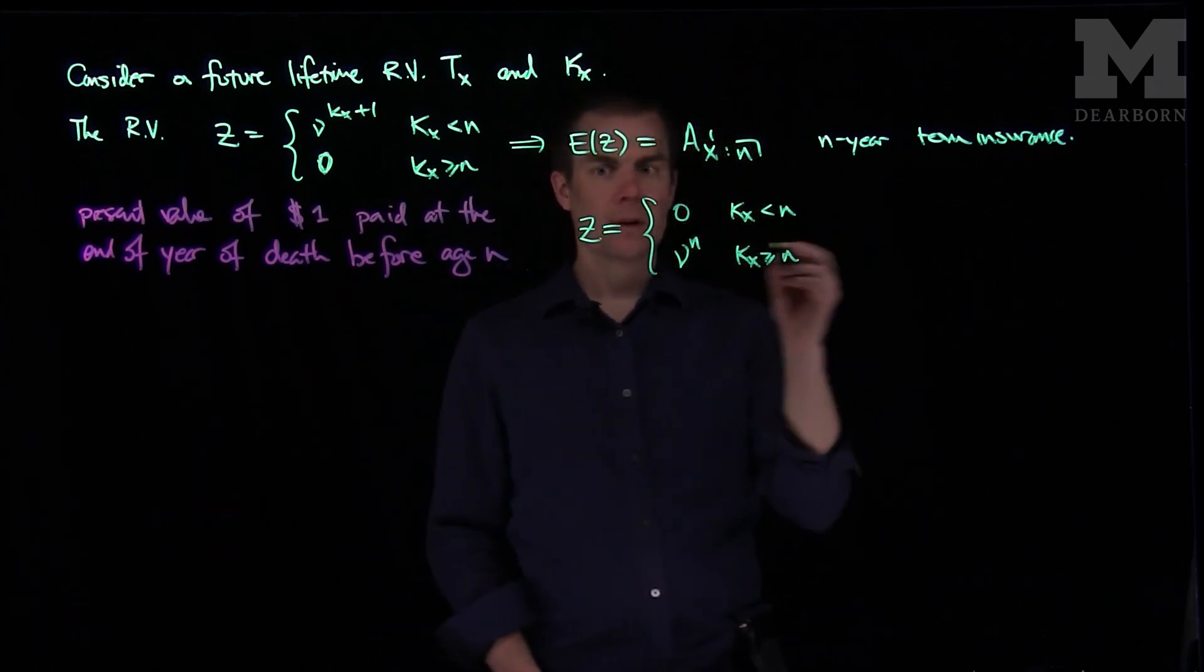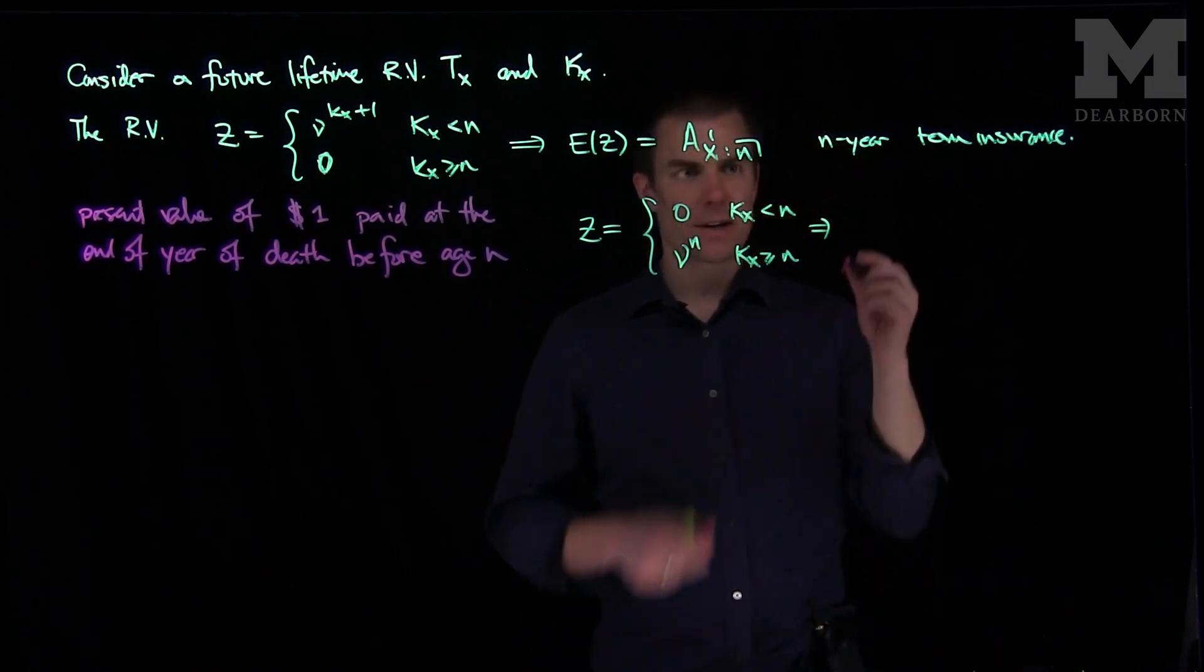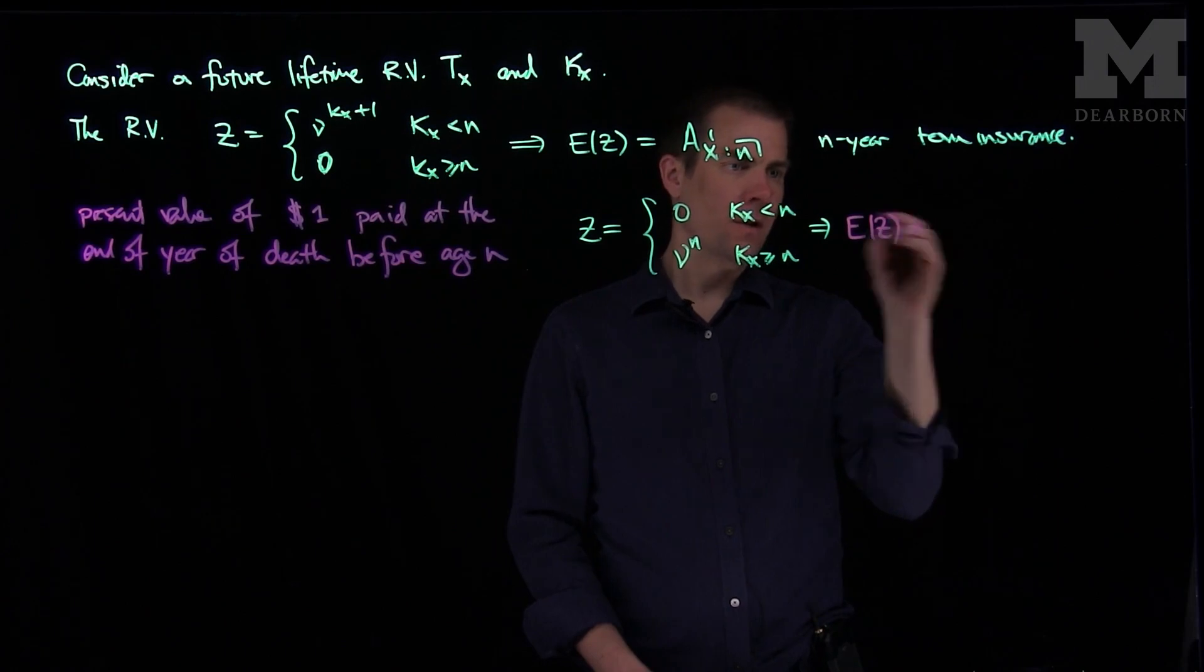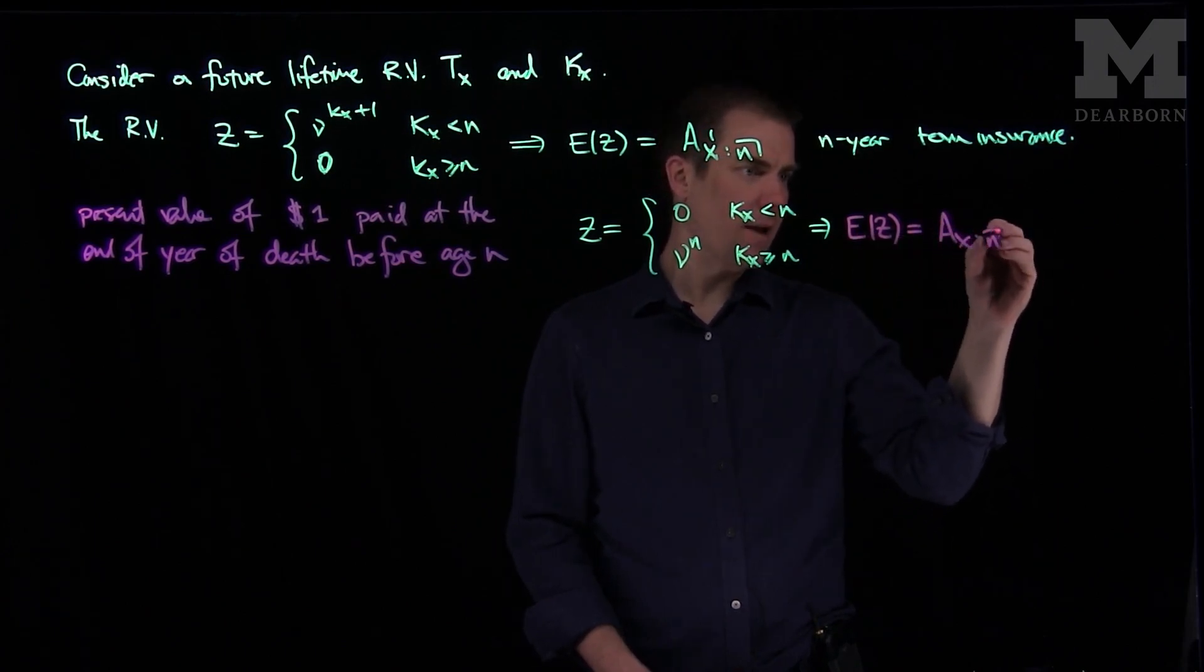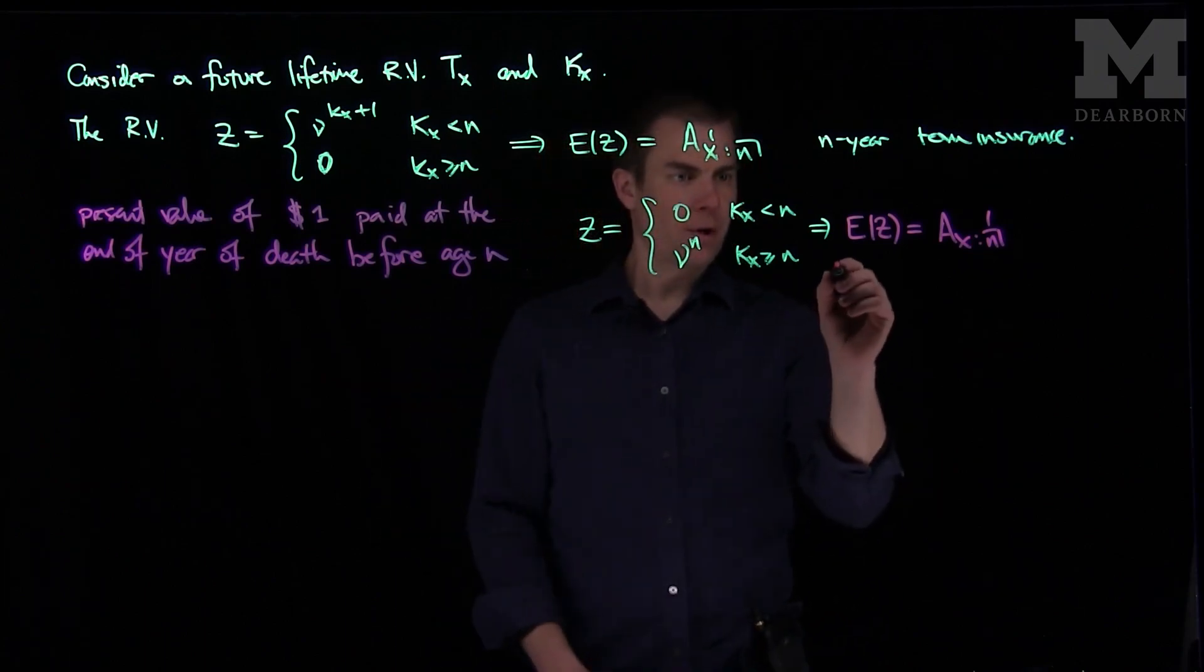And so this present value, the expected value of this random variable over here, this is an endowment, a pure endowment insurance. So E(z) for this will be Ax:n with a 1 on the right. And so this is called a pure endowment.